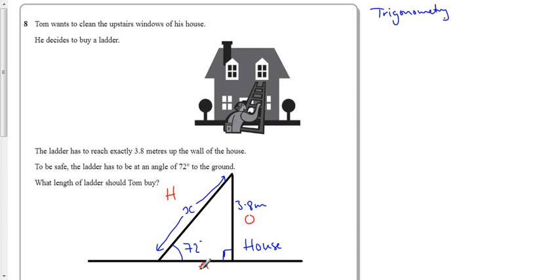We're interested in the formula with O and H, so SOH CAH TOA. The one with O and H is sine. Let's write it out for revision: SOH CAH TOA. I know the opposite and want to find the hypotenuse.